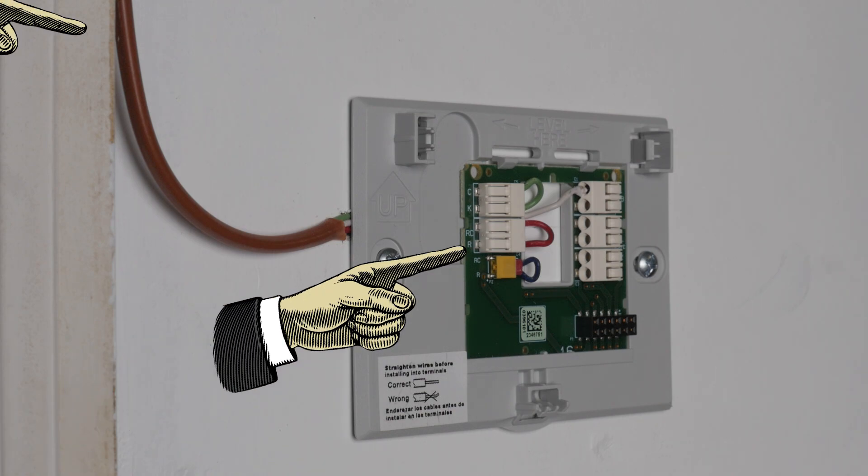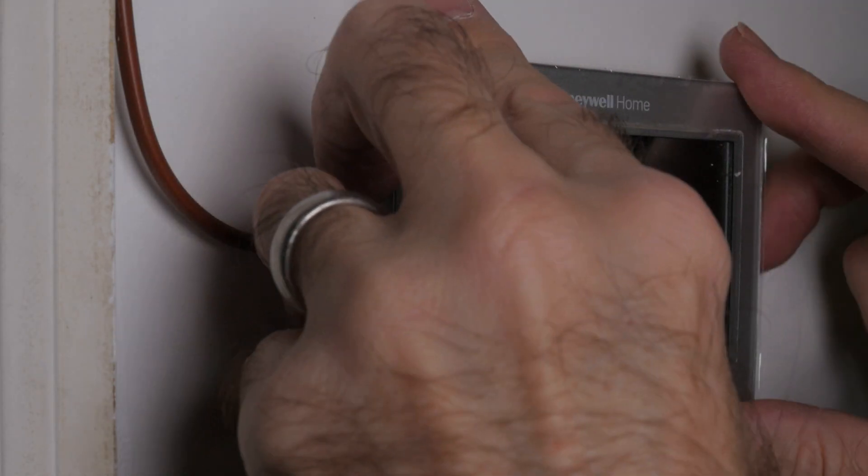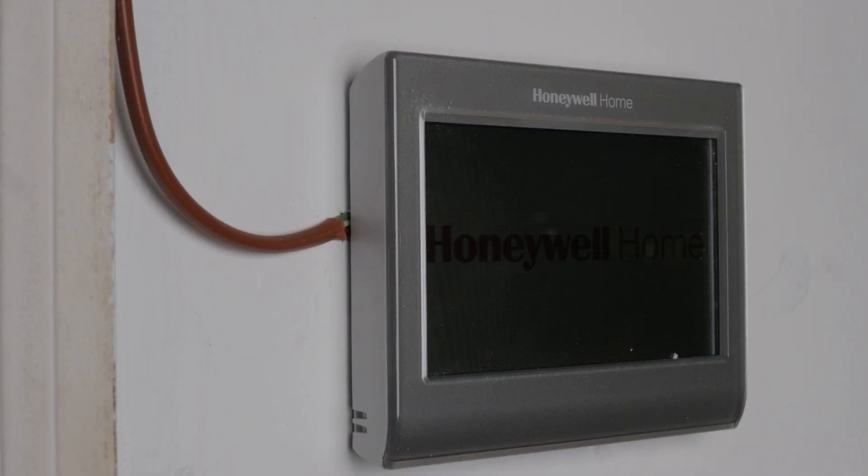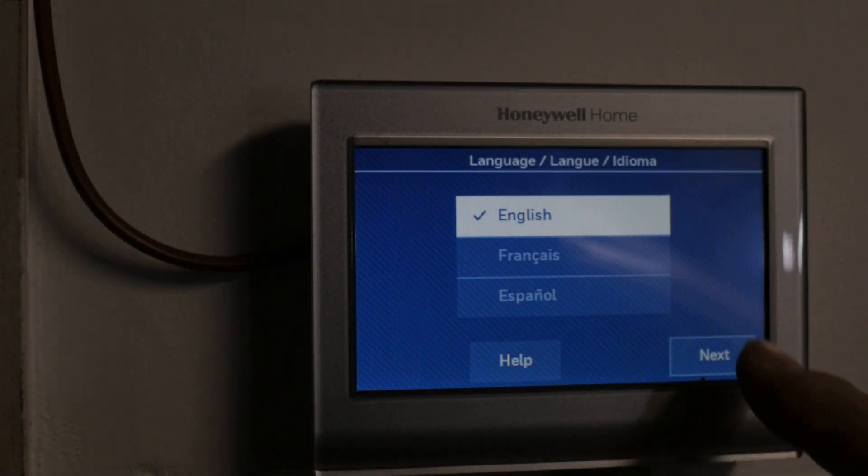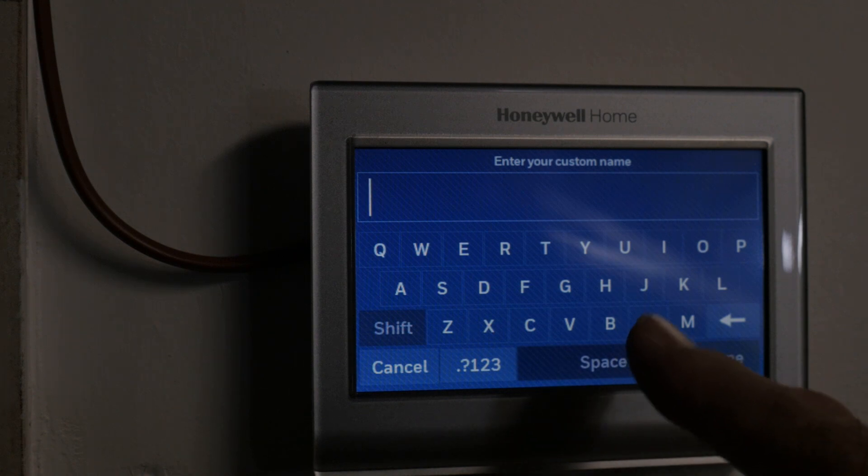The R, C and W thermostat connections are completed according to our schematic. With the new thermostat connected and seated, power is applied and the initial setup is started. Everything is very straightforward, setting time and date as well as connecting the thermostat to the Wi-Fi network.